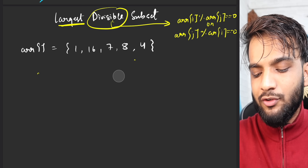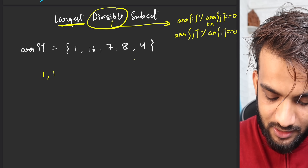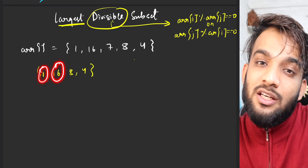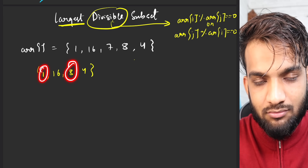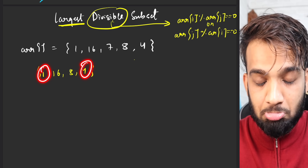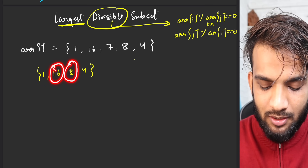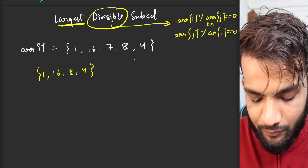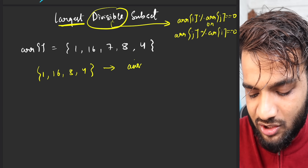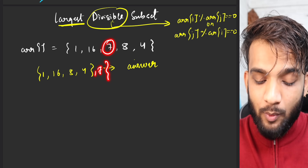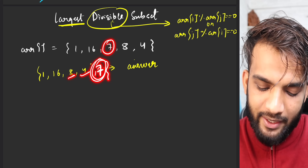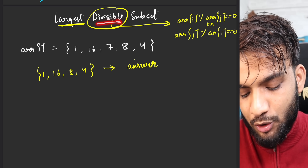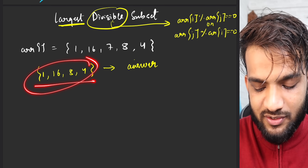The largest divisible subset would be {1, 16, 8, 4}. Let's verify all pairs: 16 divides 1? Yes — 1 divides 16 for sure. 1 divides 8, 1 divides 4, 16 and 8 divisible, 16 and 4 divisible, 8 and 4 divisible. All pairs are divisible. If you add a 7, it won't work because 7 is not divisible by 4, 8, or 16.